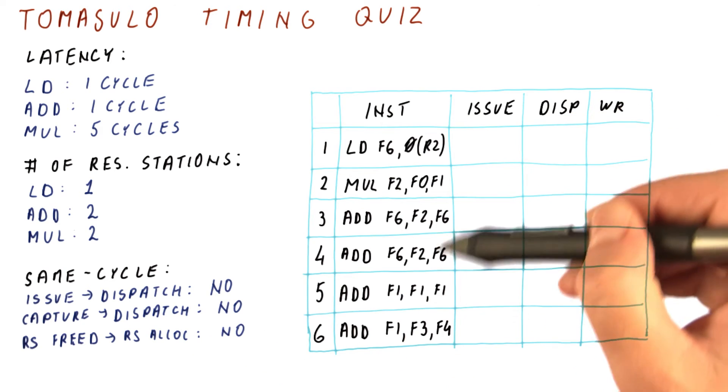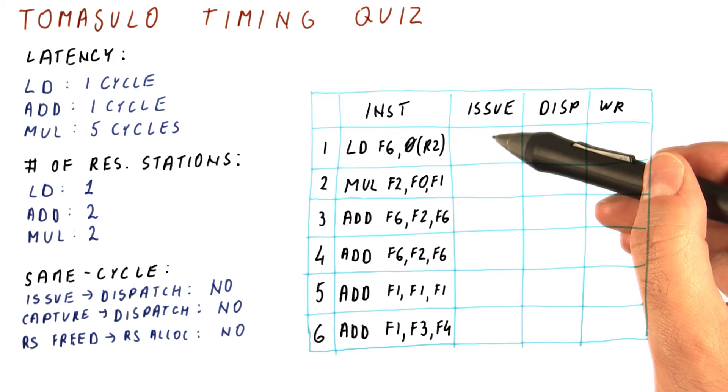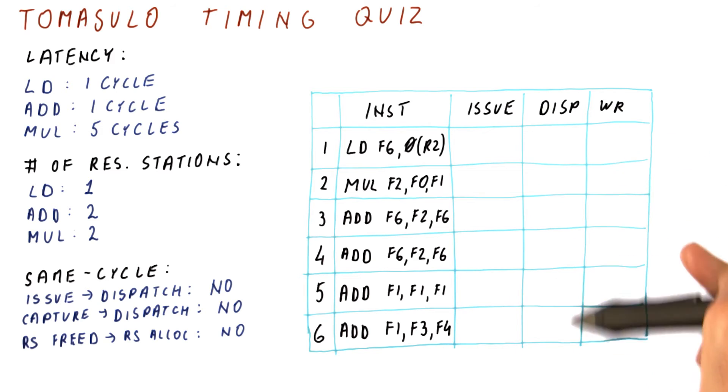These are the instructions we have. And what we need to now do is figure out the timing for them. When do they issue, dispatch, and write?